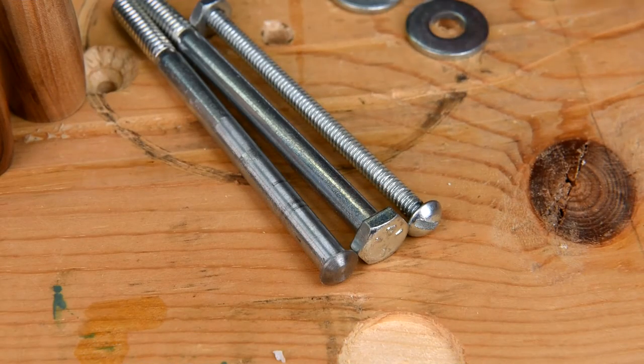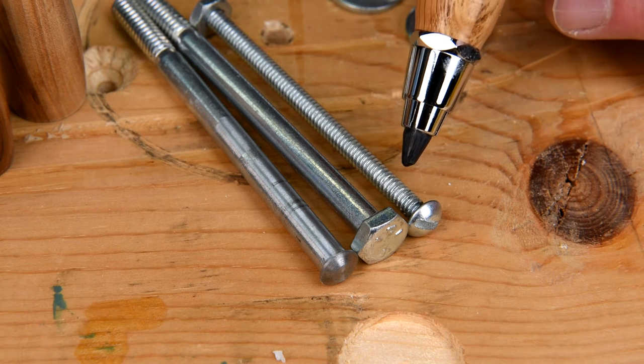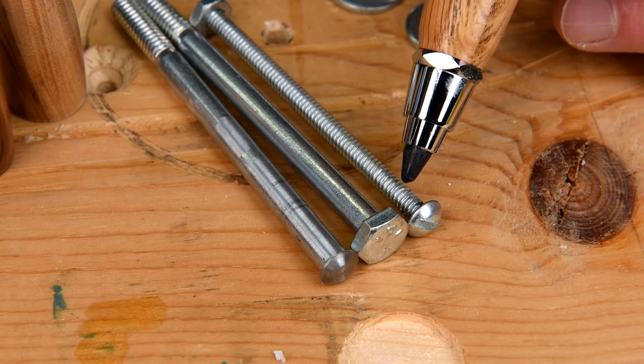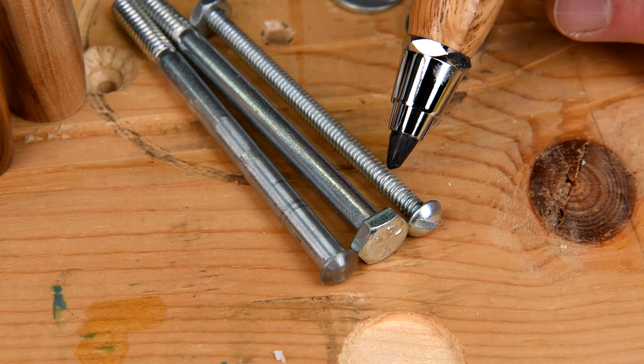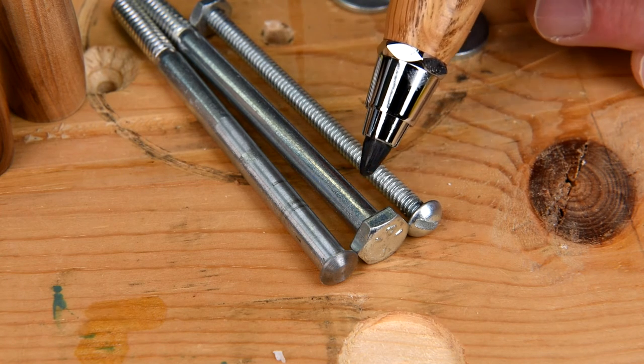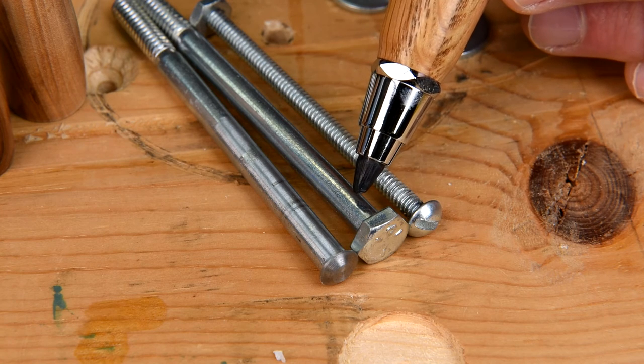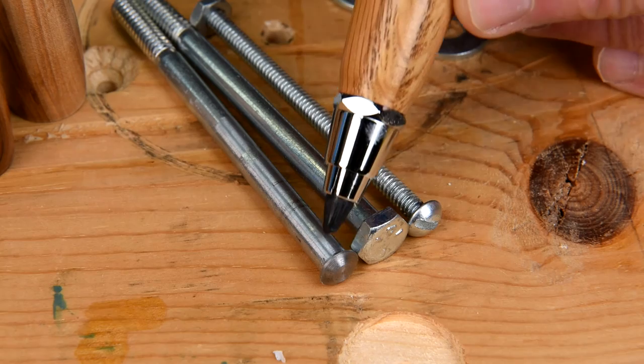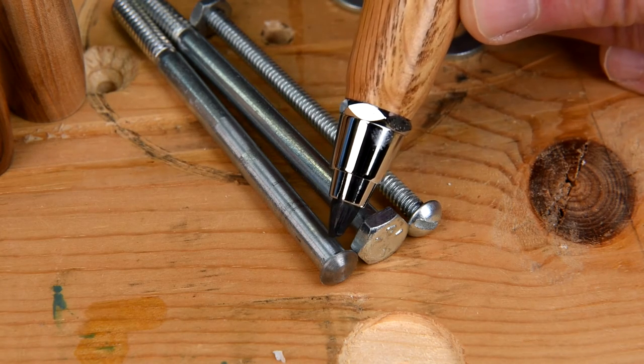Now, you probably noticed there was quite a bit of wobble there when I was using this bolt. Well, that's because this bolt is about two sizes too small and there was a lot of play inside the brass tube. What I needed was a quarter inch bolt like this, but then the head would have been too big. So I machined the head down on another one and we'll give that a try.